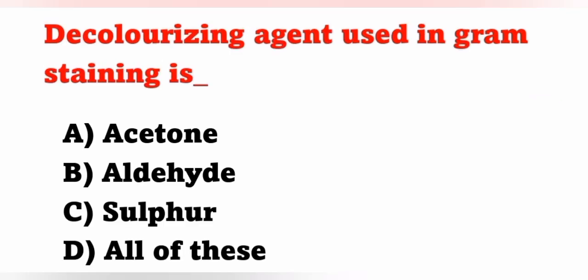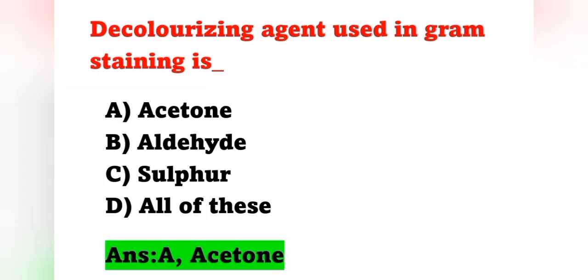Next question: the decolorizing agent used in Gram staining is — option A: acetone, option B: aldehyde, option C: sulfur, option D: all of these. Which decolorizing agent is used in Gram staining? It is acetone. Option A is the correct answer.